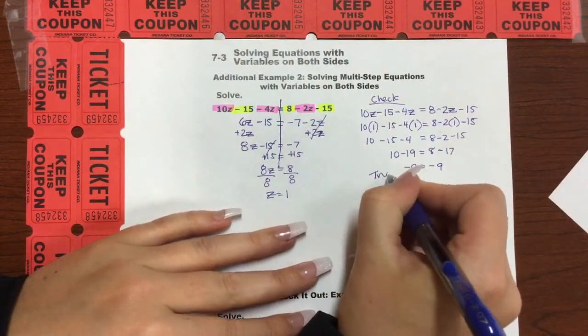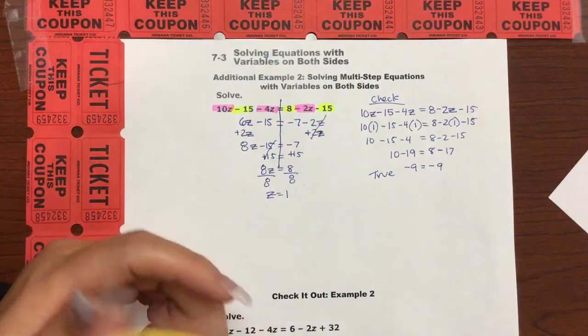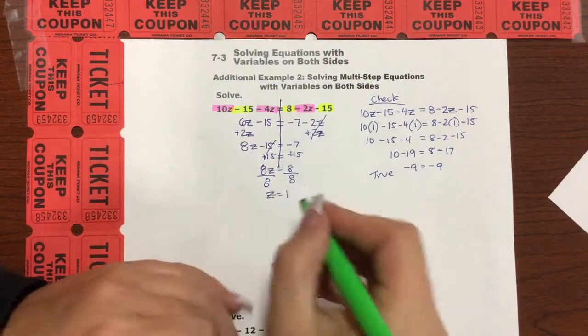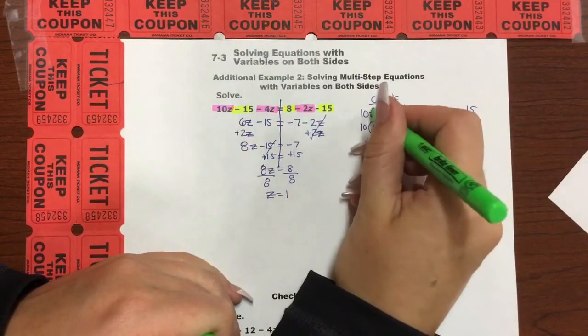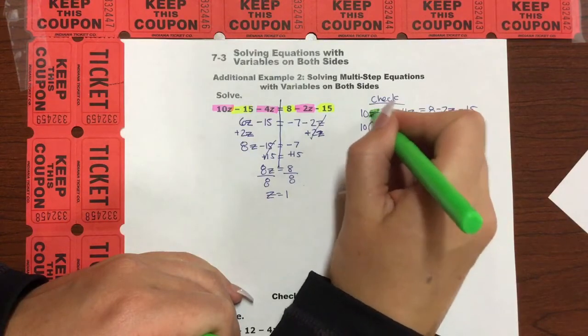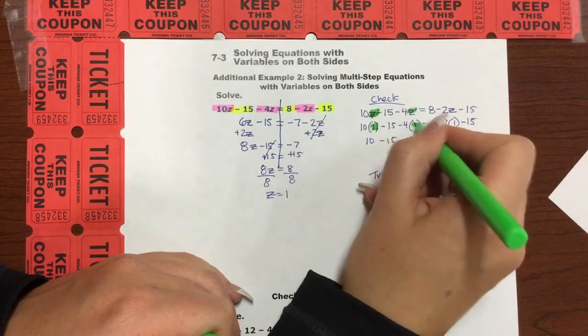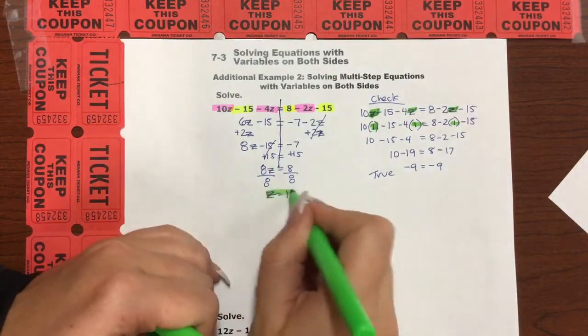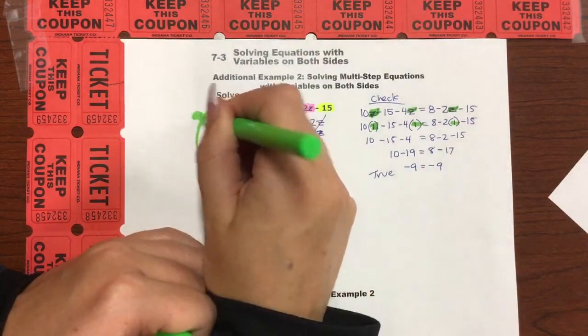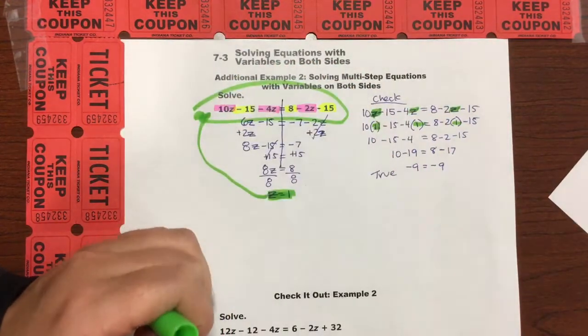So this is a true statement, which means what? It means that the number that we substituted in here for z, which was 1, right? We put 1 in there. We did it like three times because we're awesome. Z equals 1 is the solution to this magnificent, wonderful, original equation.